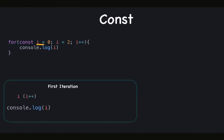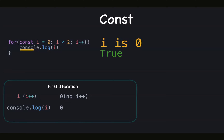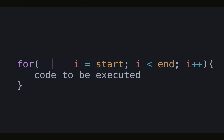In the first iteration, i is zero and there is no i++ — zero less than two is true, so it enters the block and console.log gives zero. In the next iteration, i is zero and i++ throws an error, because we can't change the value of a const variable. So it outputs zero and then throws an error. This is how the for loop works against var, let, and const.